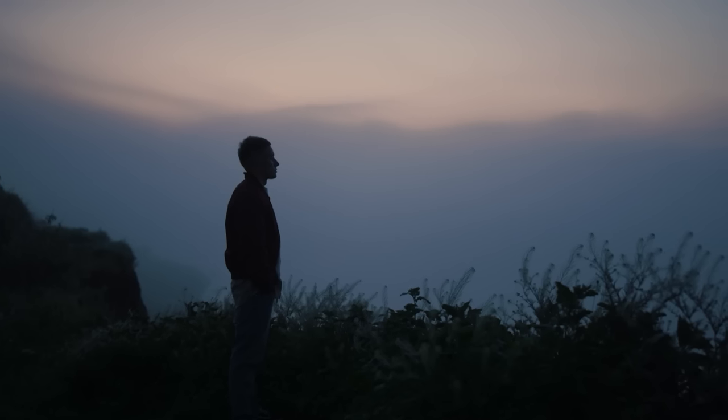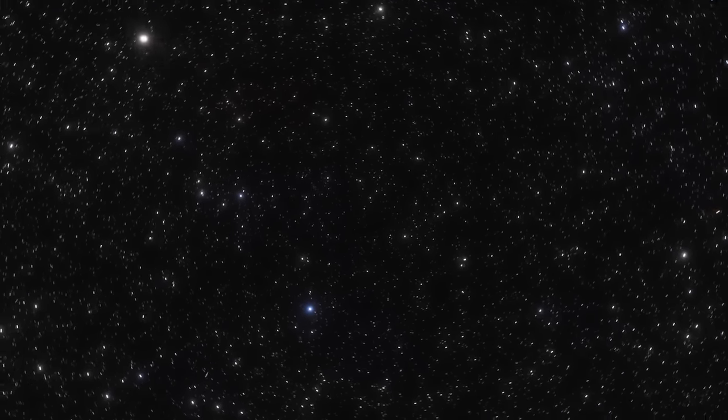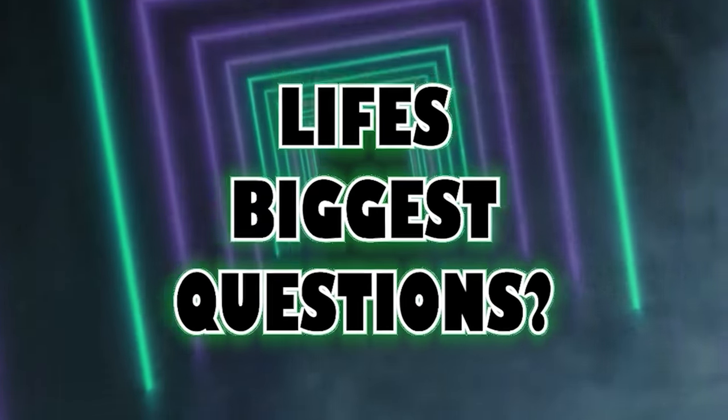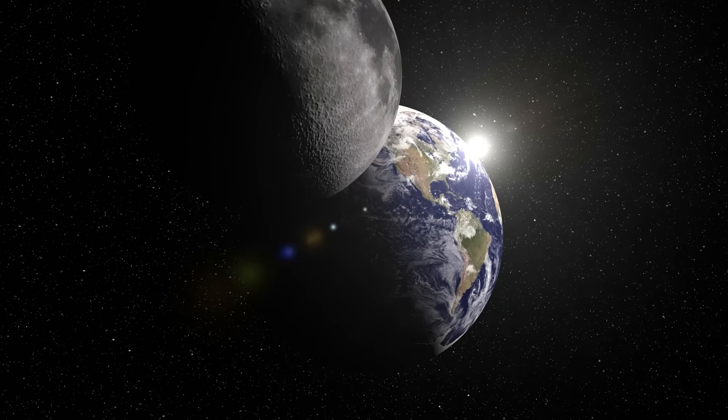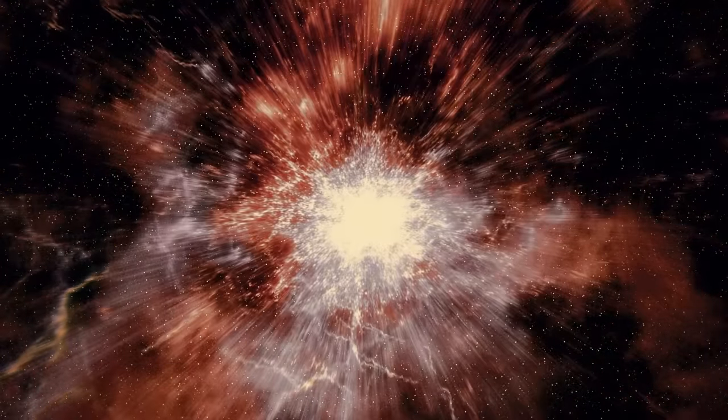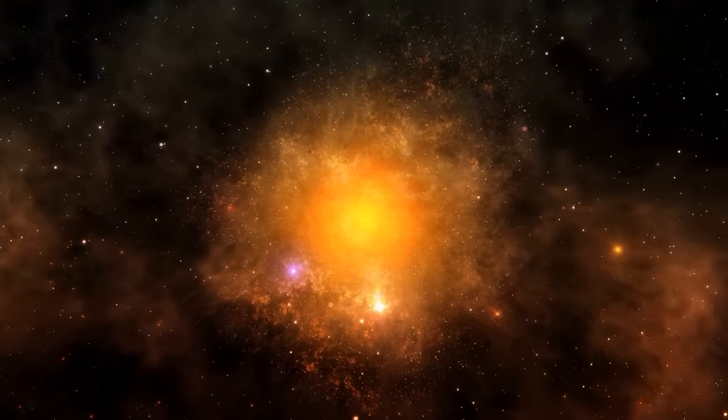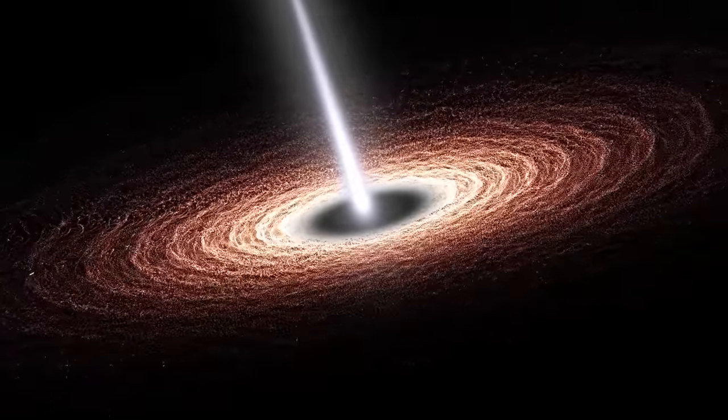Have you ever gazed up at the night sky and wondered just how far your eyes can see? Stars, planets, galaxies, they all seem so close yet are unimaginably distant. Our universe is vast, almost incomprehensibly so, and today, we're going to journey to its very limits, to the edge of the ancient universe. Imagine holding a snow globe. Everything inside it is clear and visible, but what lies beyond the glass sphere remains a mystery. This snow globe analogy offers a simplified perspective of the observable universe. Our cosmic sphere has boundaries not due to any physical barrier, but because of the limits of time and light. The universe itself is approximately 13.8 billion years old. But strangely, the observable universe extends about 46.5 billion light-years in any direction from us. How is this possible? The answer lies in the expansion of the universe.